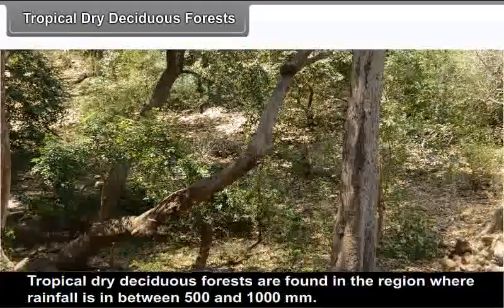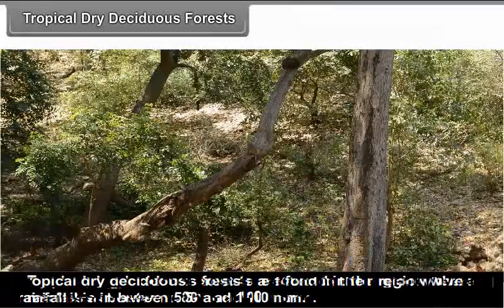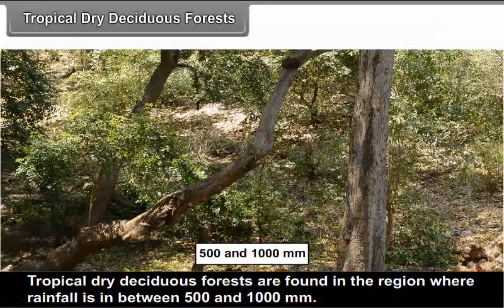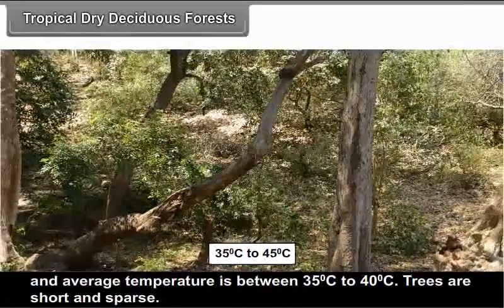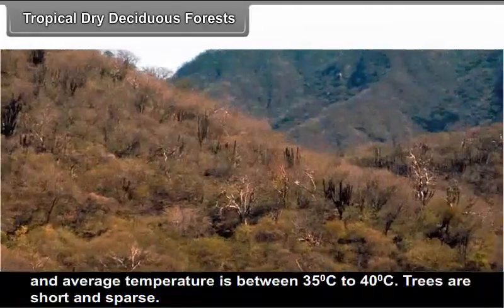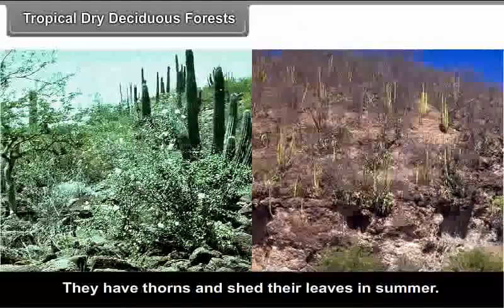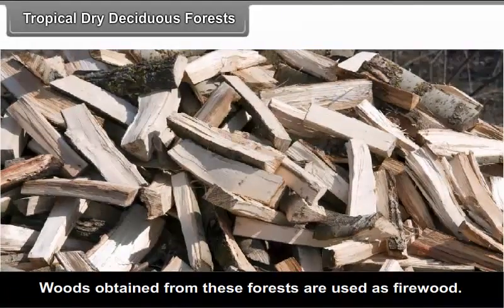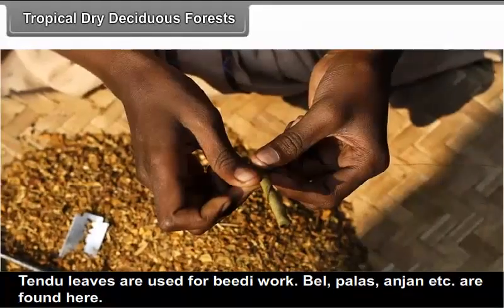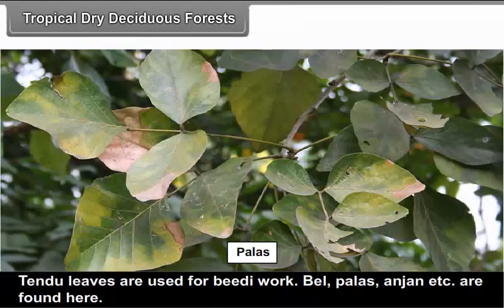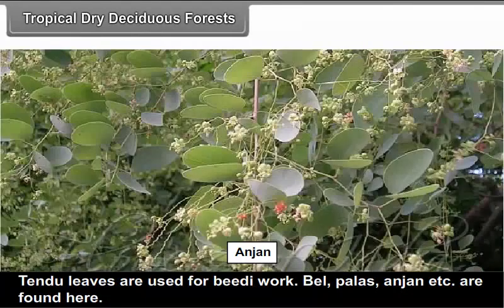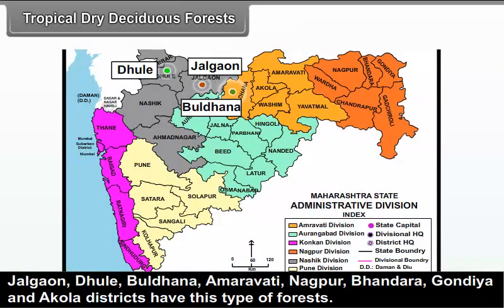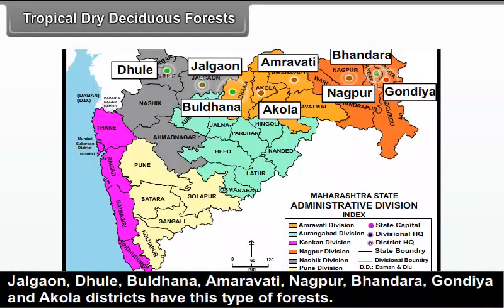Tropical dry deciduous forests are found in regions where rainfall is between 500 and 1,000 mm and average temperature is between 35°C to 40°C. Trees are short and sparse, have thorns, and shed their leaves in summer. Wood from these forests is used as firewood. Tendu leaves are used for bidi making. Tree species include Bel, Palas and Anjan. These forests are found in Yavatmal, Latur, Buldhana, Amravati, Nagpur, Bhandara, Gondiya and Akola districts.